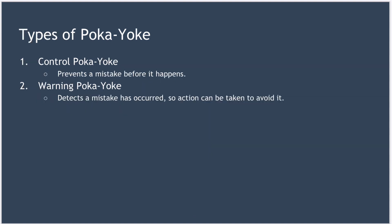Broadly speaking, Poka-Yoke fall into two distinct types. First, we have control Poka-Yoke, and these prevent a mistake from being made before it happens and in doing so eliminate the mistake. Secondly, we have warning Poka-Yoke, and these alert the operator that a mistake is being made so immediate action can be taken to avoid it.